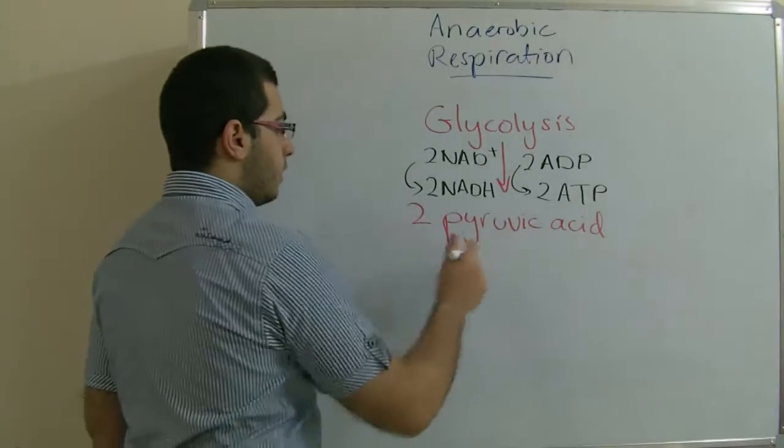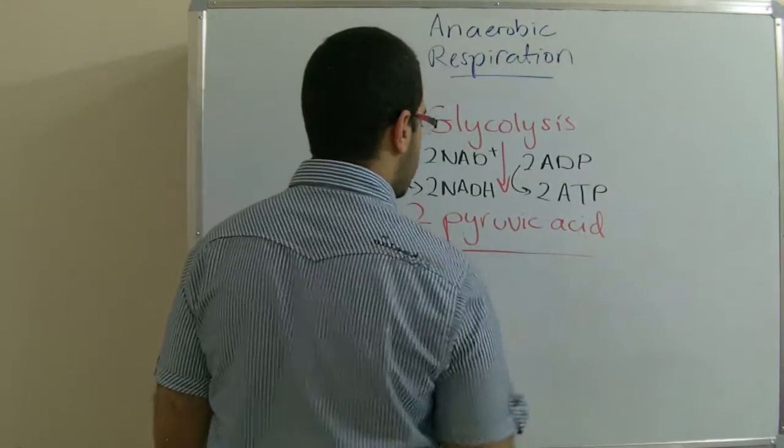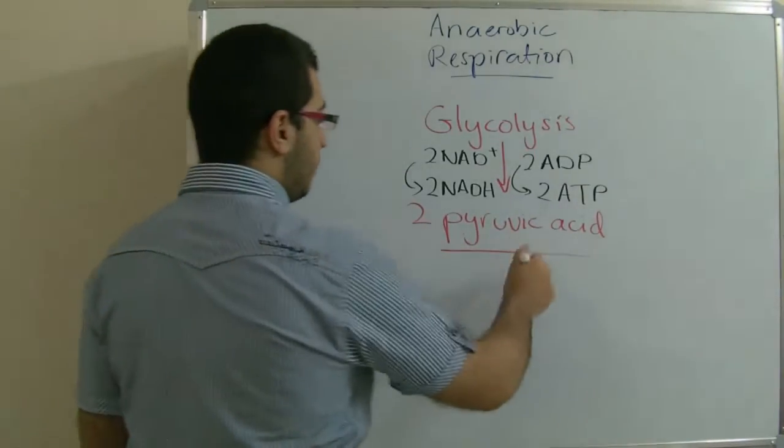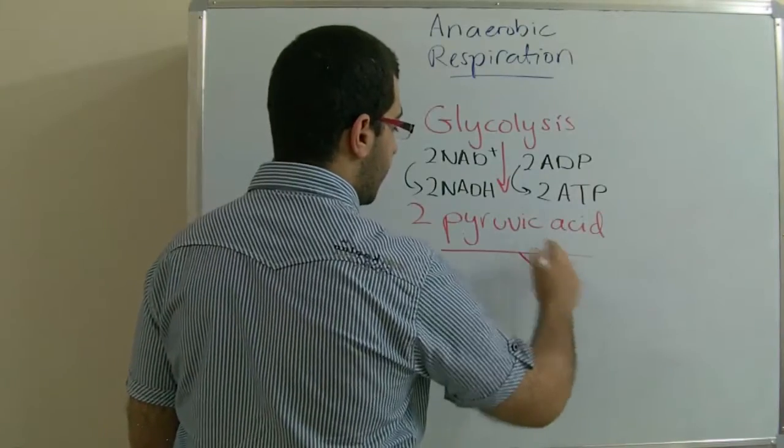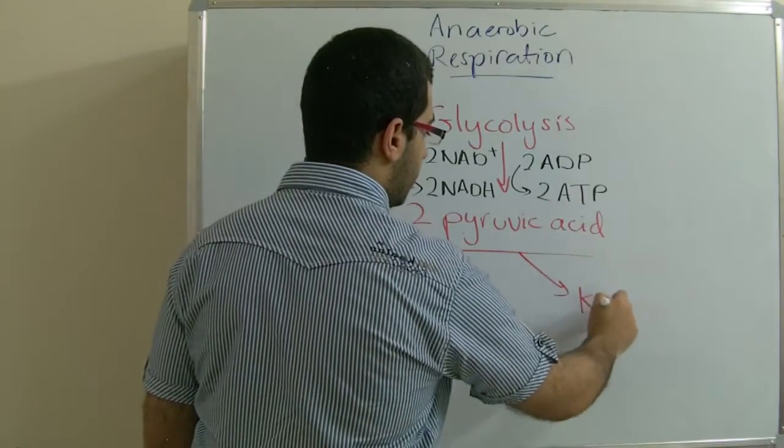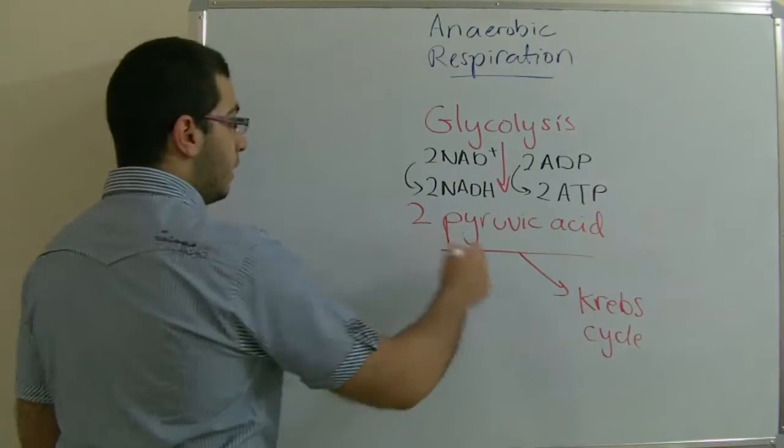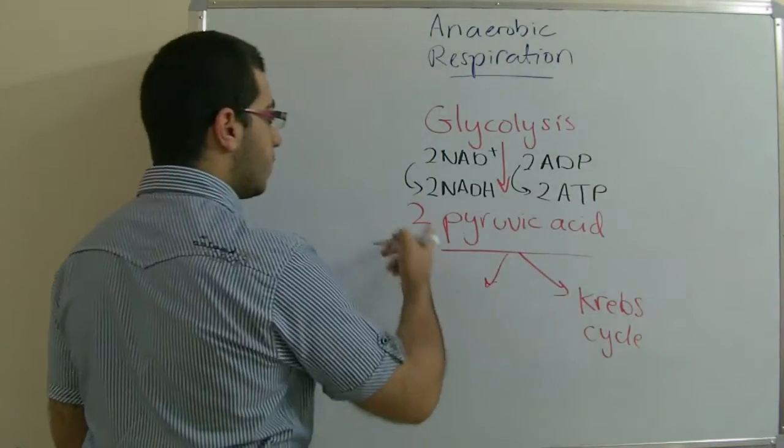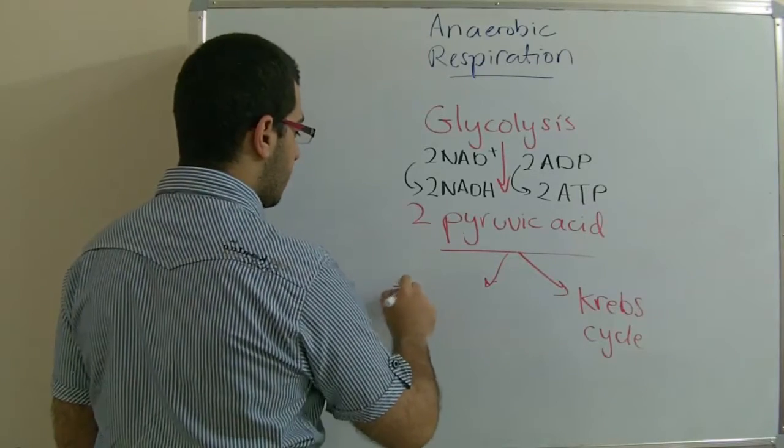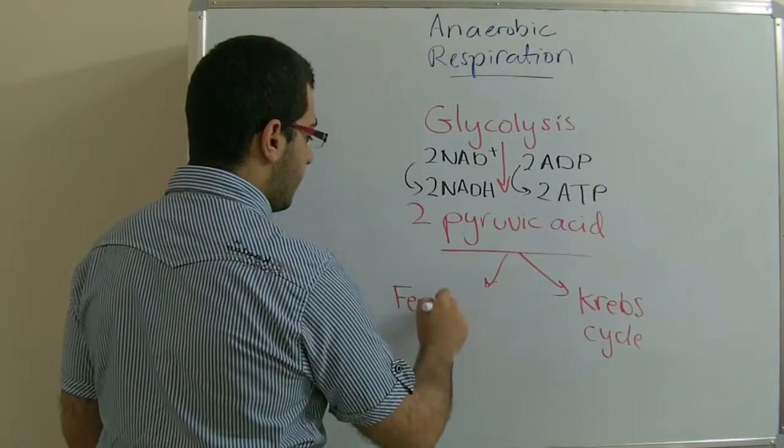From here, the change takes place. If there is oxygen, pyruvic acid undergoes the Krebs cycle to perform aerobic respiration. While if there is no oxygen, two pyruvic acid molecules go under a process called fermentation.